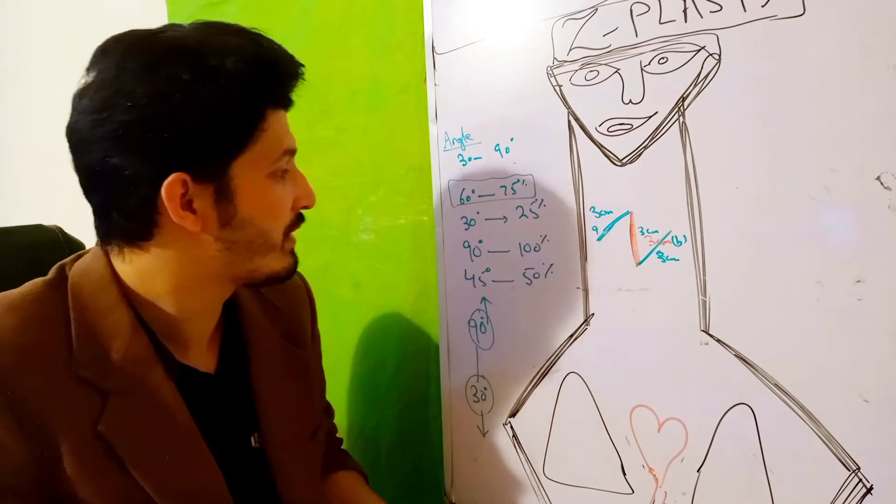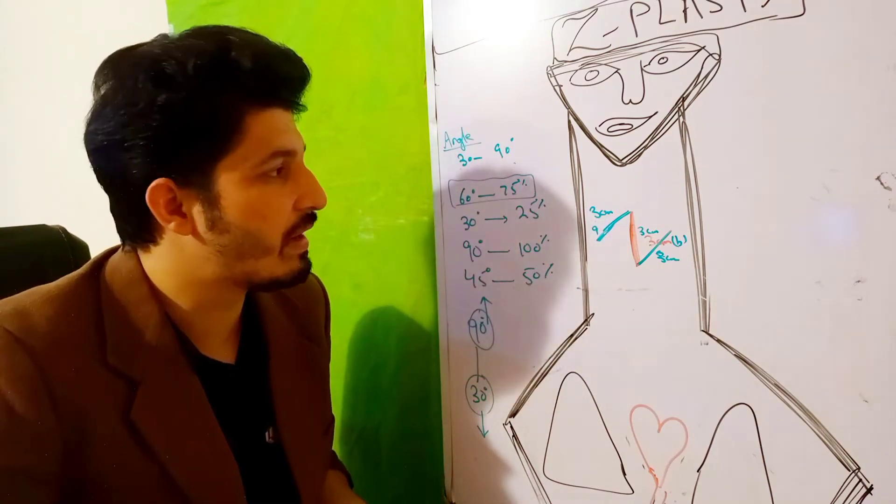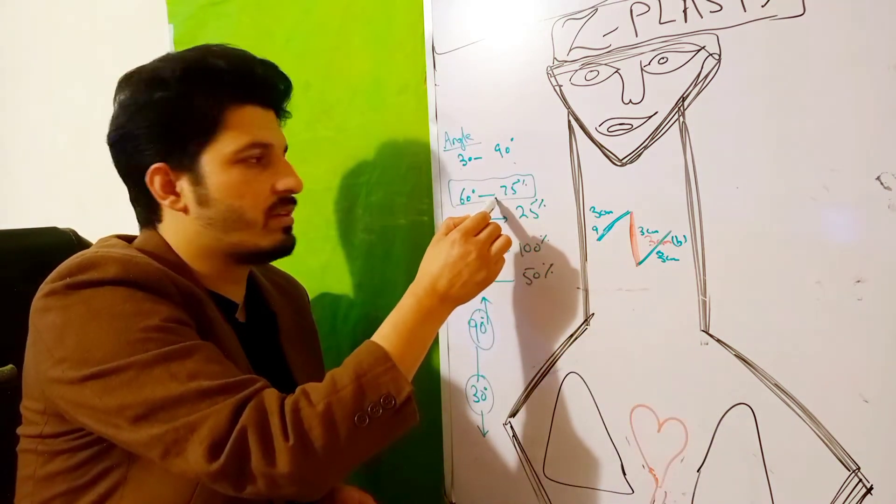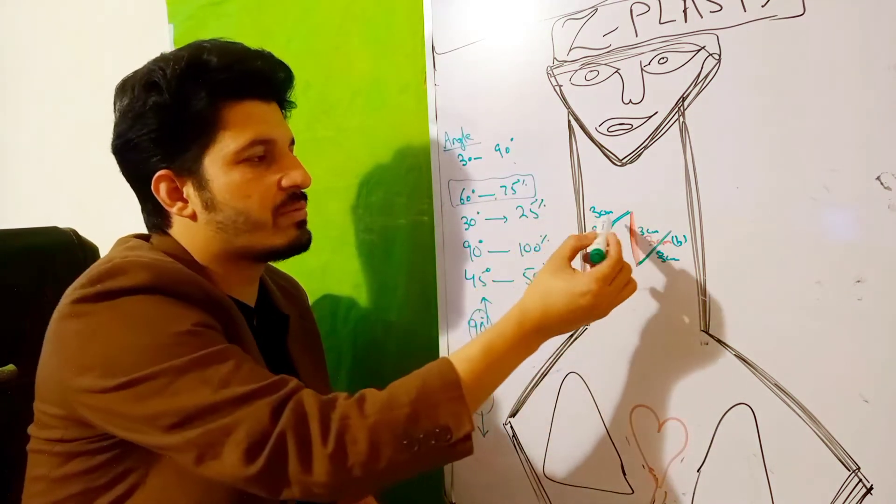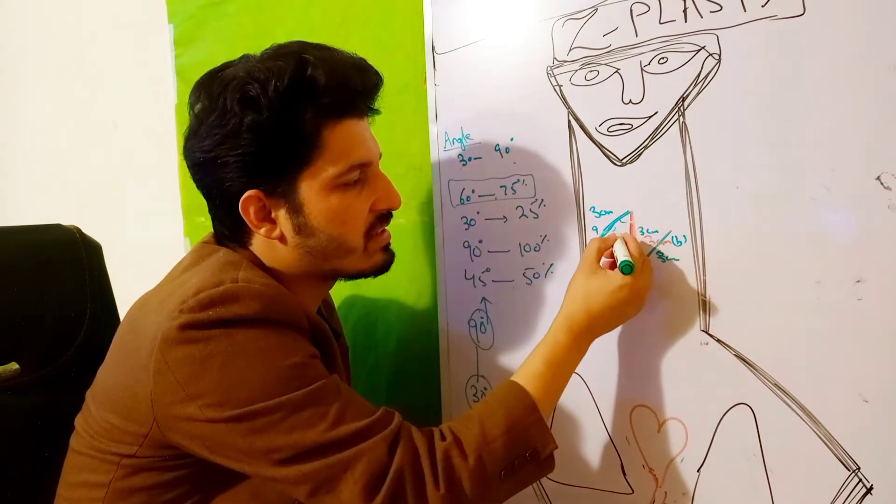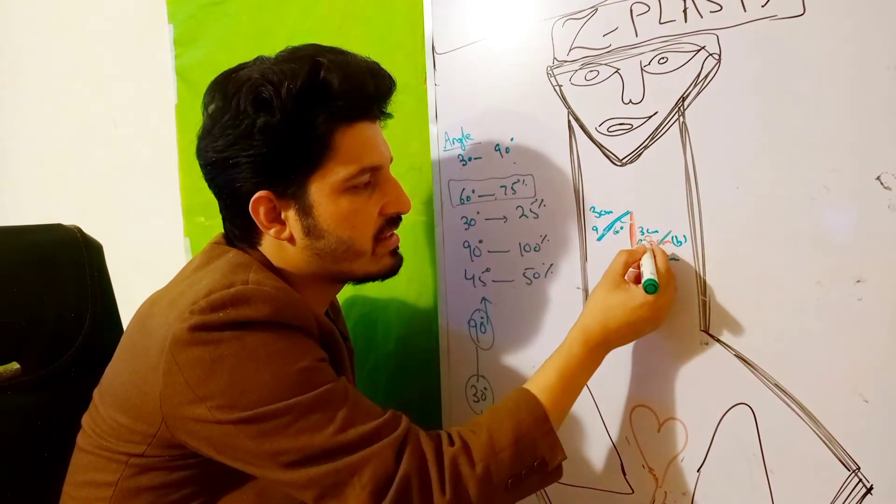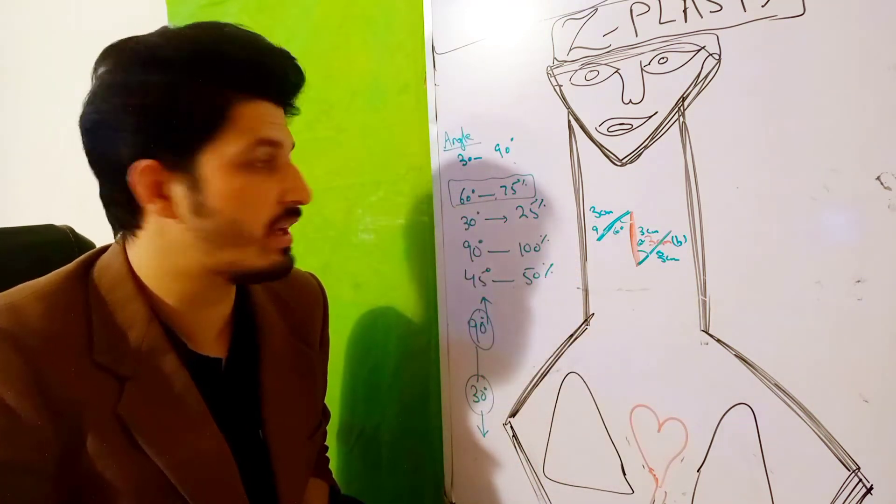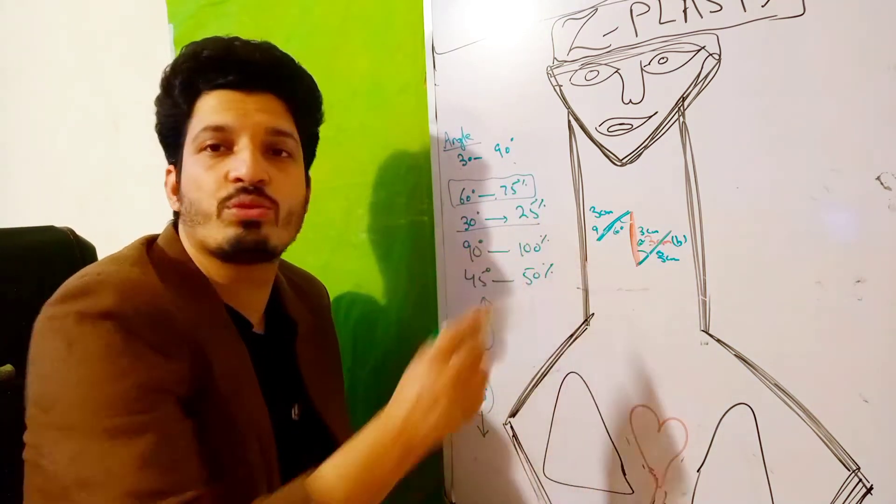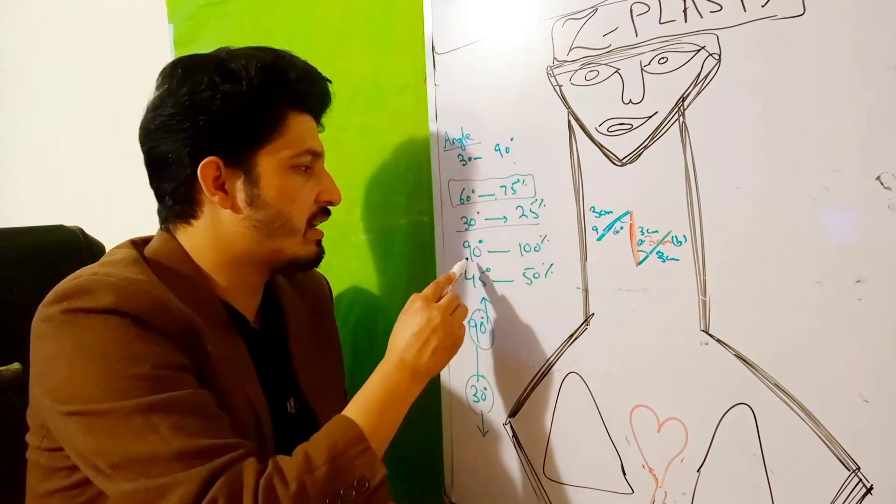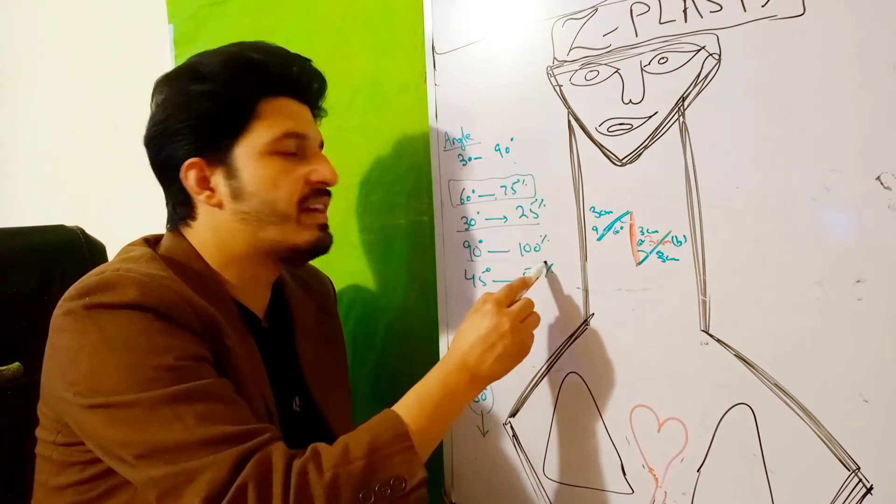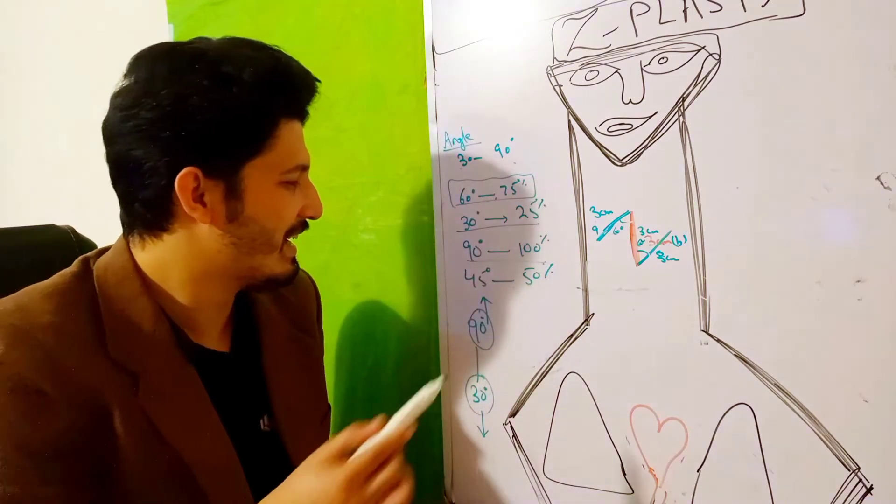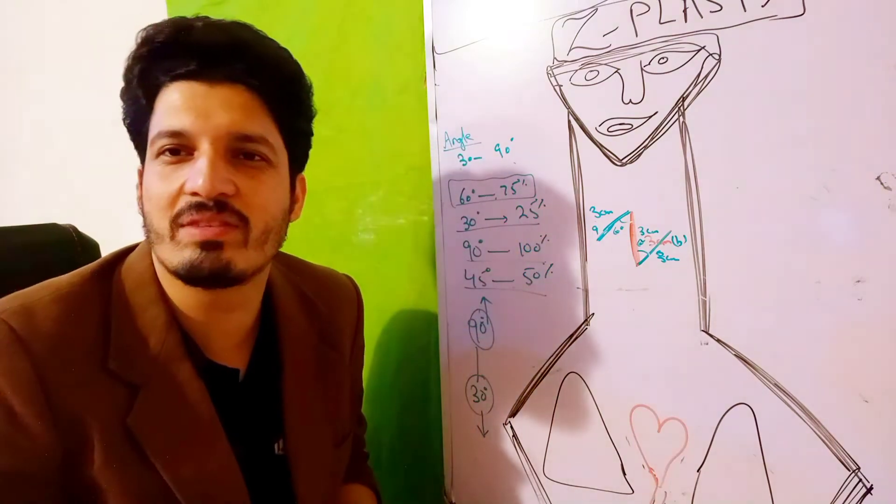You might be asked how much length you can achieve with a 60-degree angle between the limbs. You can achieve 75 percent. If your angle is 30 degrees, you can achieve 25 percent length. If your angle is 90 degrees, you can achieve 100 percent length. And if your angle is 45 degrees, you can achieve 50 percent length.